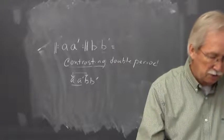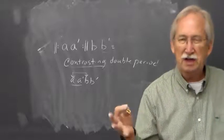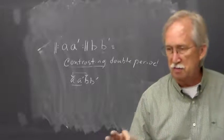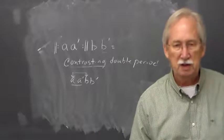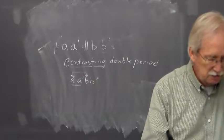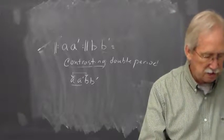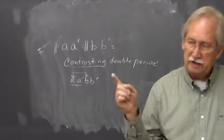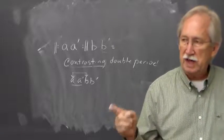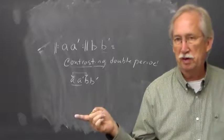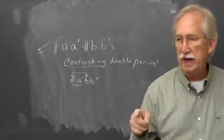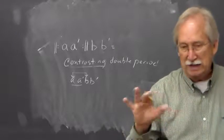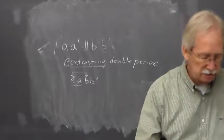Maybe Benward would call that a contrasting period. But I'm not going to grade you on parallel and contrasting where there's a difference of opinion at that level. You just want to use these terms consistently. So if you put letter names A, A prime, then you have to put parallel period. If you put A, B, then you would put contrasting period. I will grade that, and it has to be consistent.